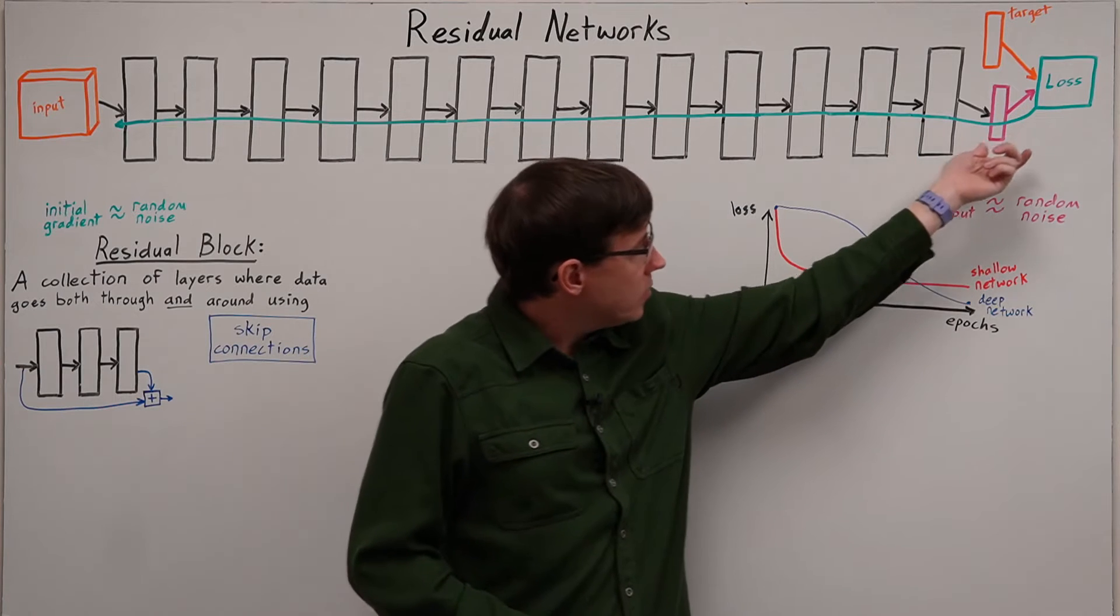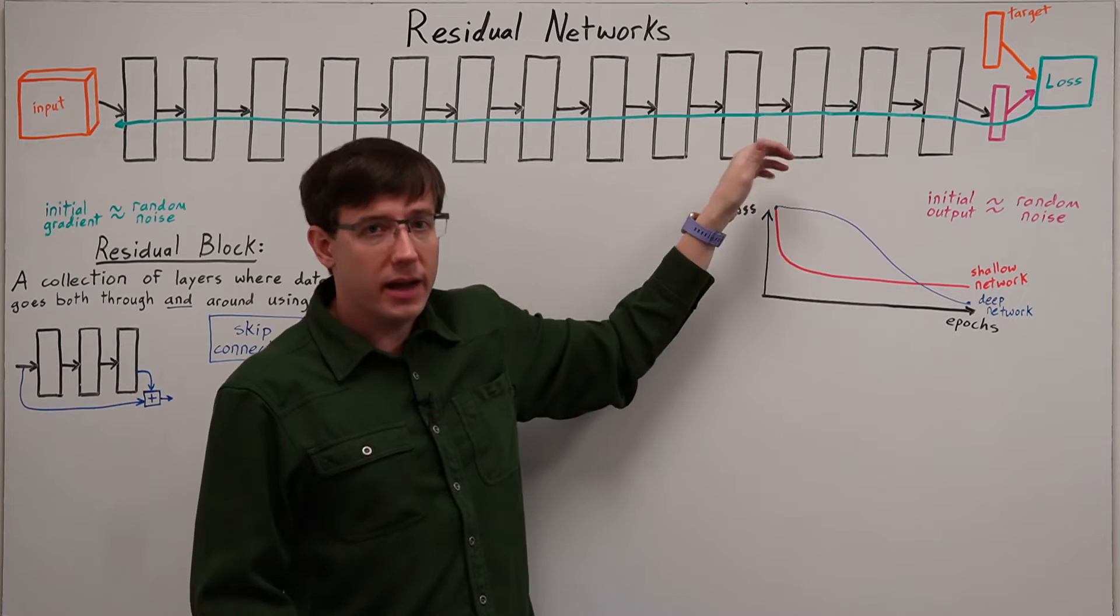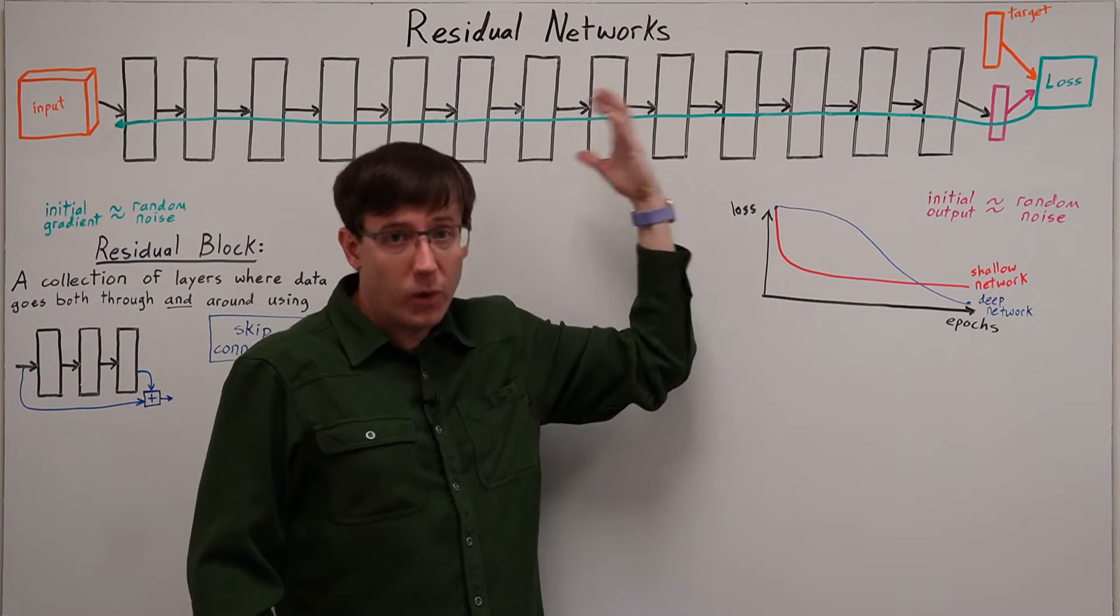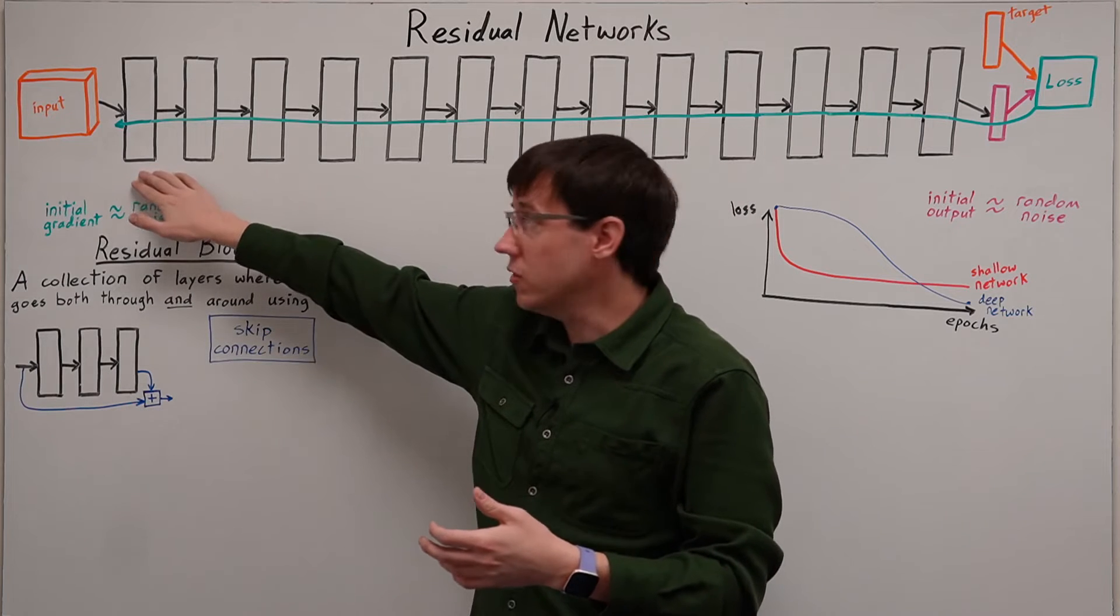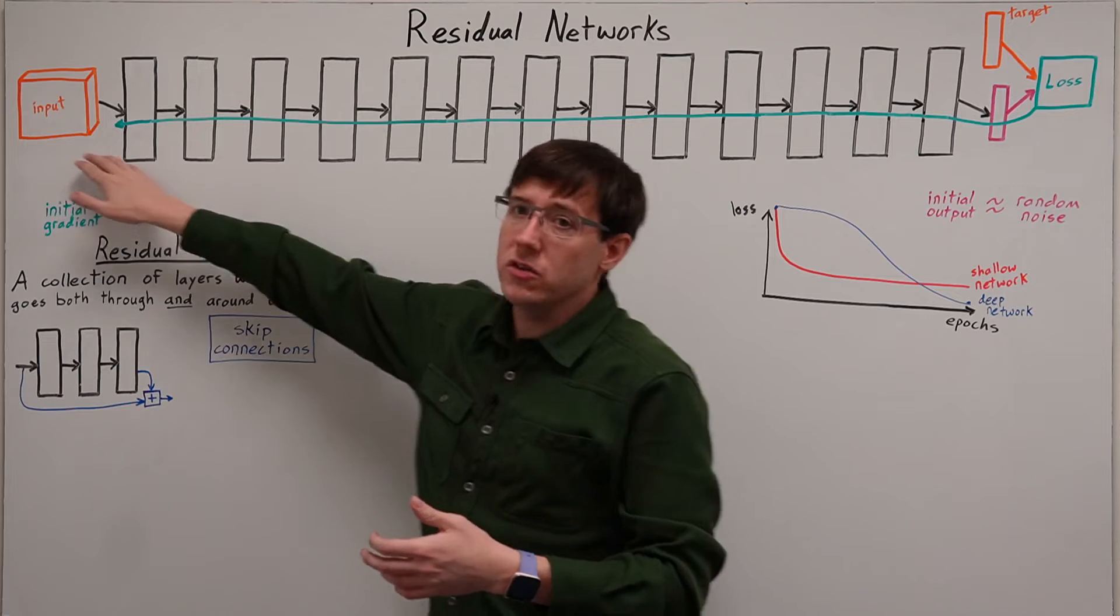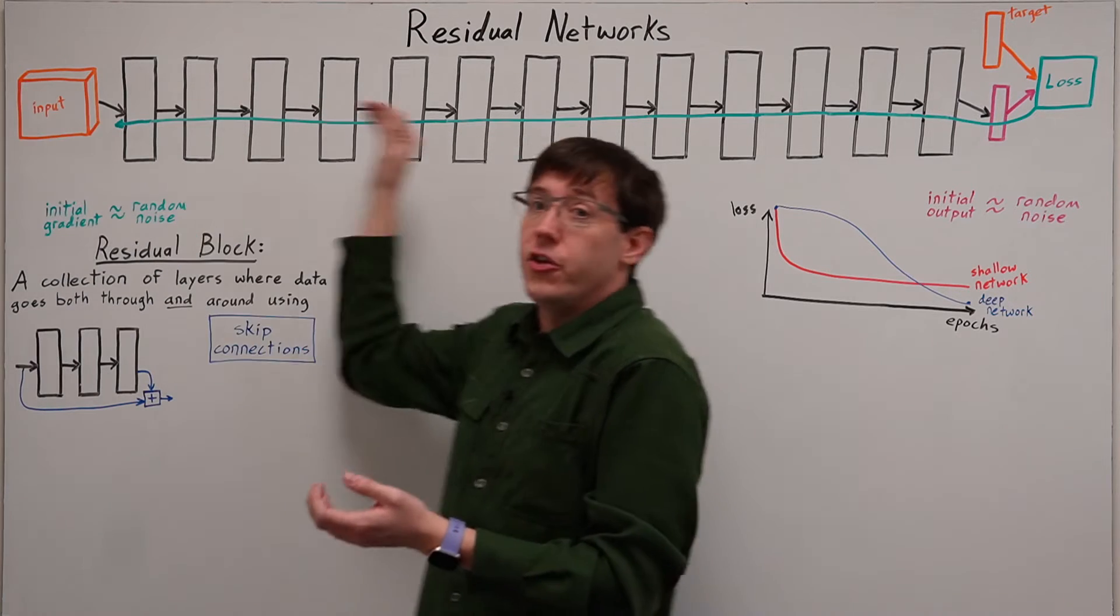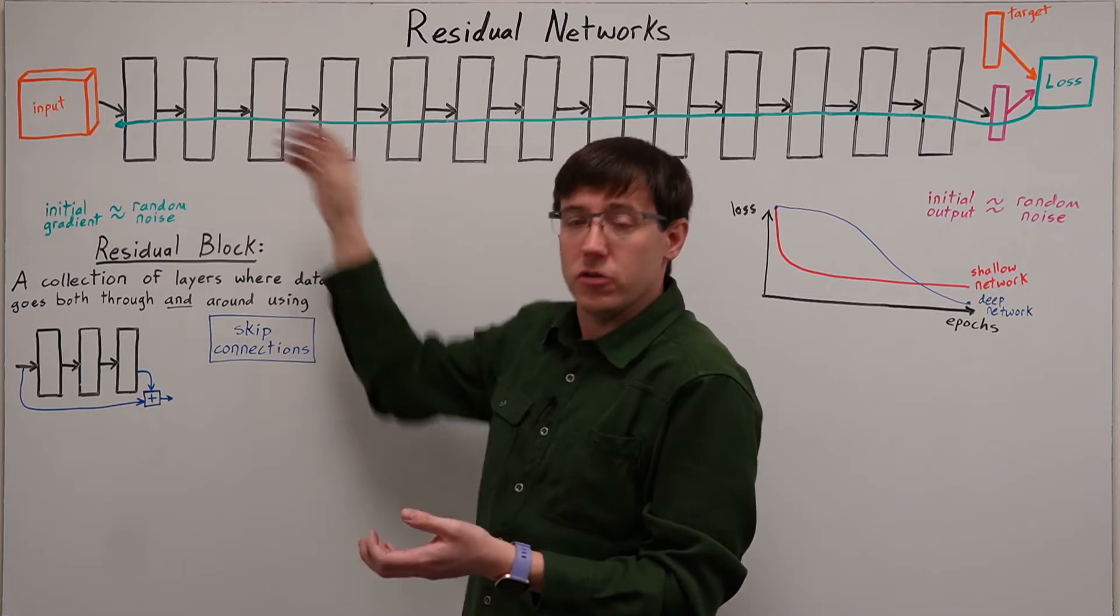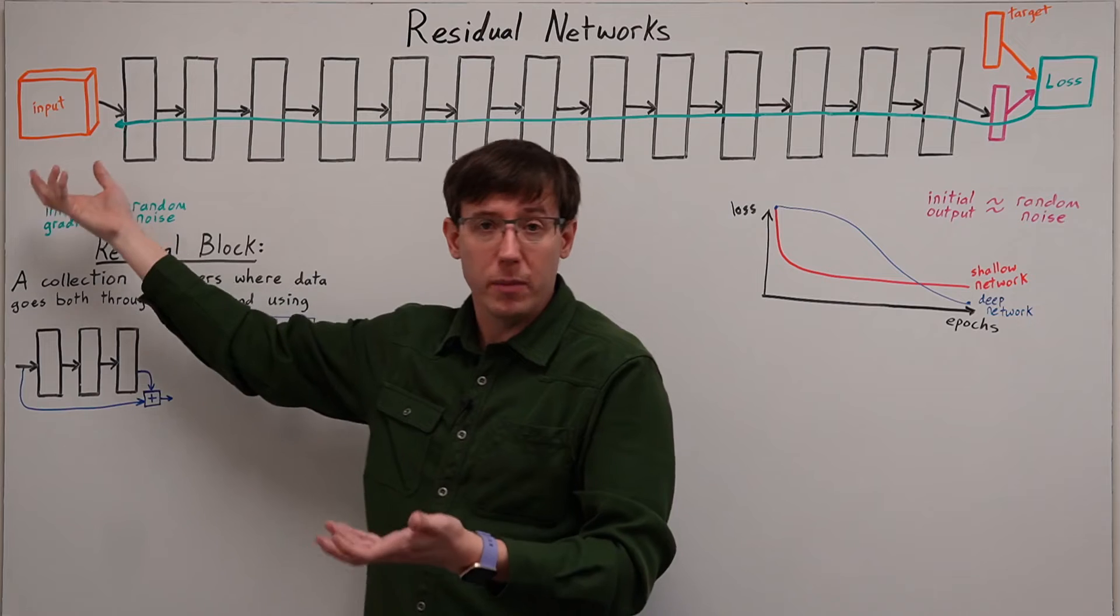And when we pass gradients back through the network, each layer multiplies the deltas by its weight matrix. And so by the time we get back to the early layers that had inputs with some meaningful connection to the data, the gradients have also been scrambled by many multiplications of random weight matrices.